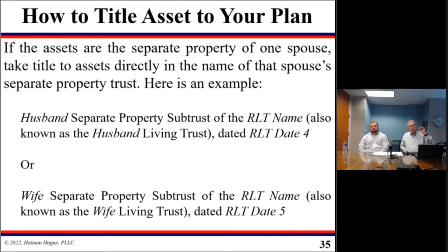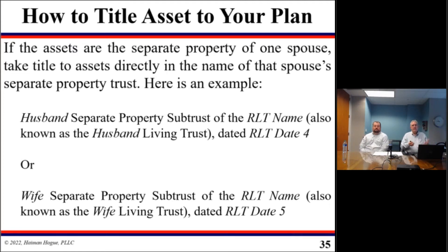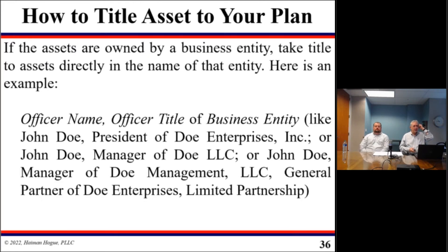We create seven trusts for married couples specifically because it's easier to deal with separate and community asset issues that come up. A lot of people think they can put separate property into their joint trust and it still retains its separate property character. Yes, but it may have created a presumption of community property that can be disastrous down the road.